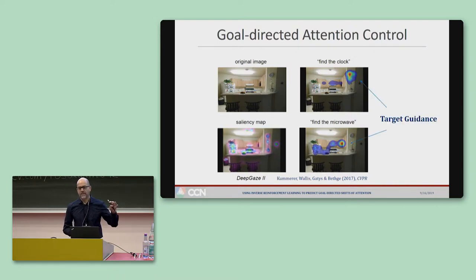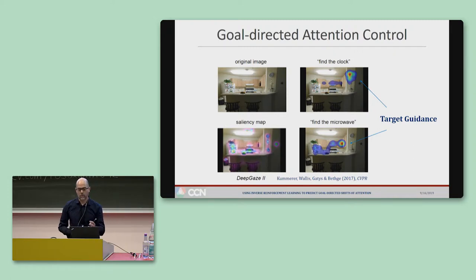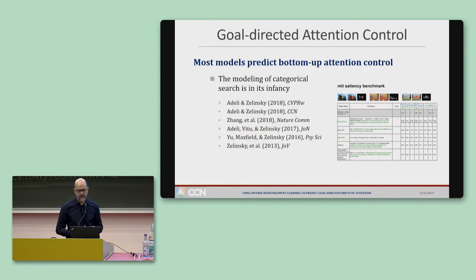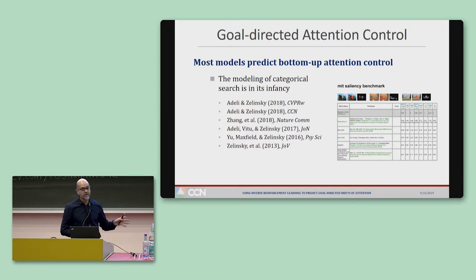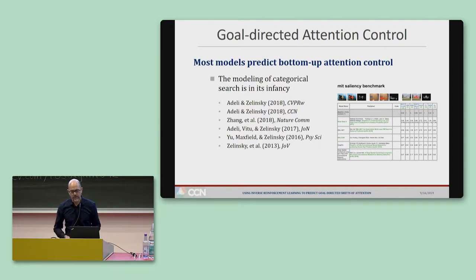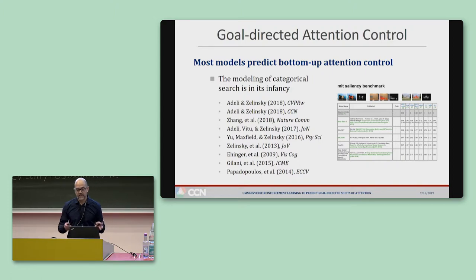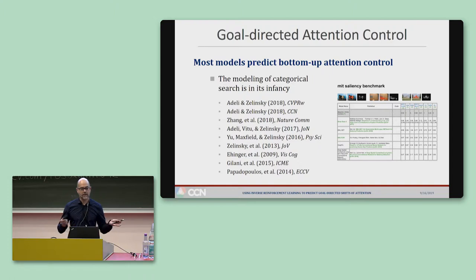Search researchers refer to this as target guidance, which is the control of attention by a target goal. Surprisingly, and in contrast to the rich literature on bottom-up attention modeling, the modeling of target category search is really, really sparse — and a lot of it is by these dubious Adeli and Zelinsky characters. One reason for this is because it's a really hard problem, right at that intersection of attention and recognition research.